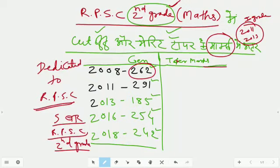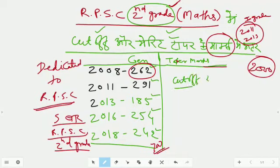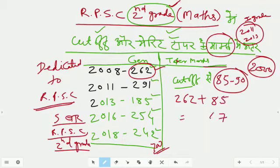Because the posts are good in the second grade, if we leave the post in 2018, the posts have always been substantial. So if you look at this, I have always seen that the cut-off is from 85 to 90 marks.